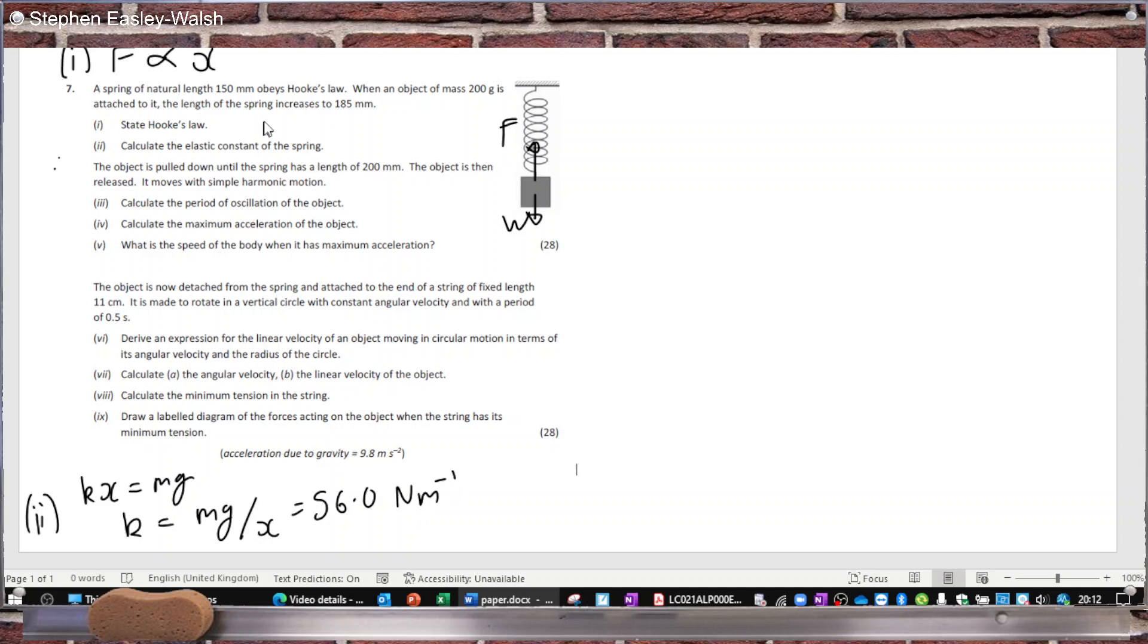Part 3: Calculate the period of oscillation. That's T equals 2π√(M/K). So that's 0.375 seconds.